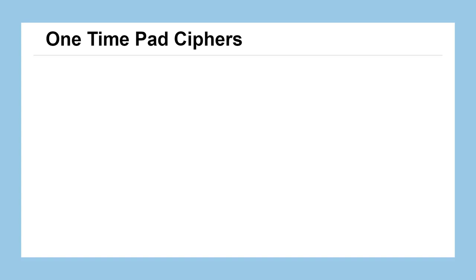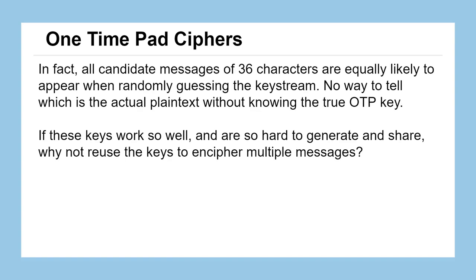When you are free to choose any random character for the key at any position, you could conceivably decode any candidate plain text that is a real English message. In theory, if you brute forced this, you'd generate all possible messages of 36 characters long — they're all equally likely to appear. There's no way for someone trying to brute force this to tell which is the actual plain text without knowing the true one-time pad key. Unlike substitution ciphers with one-to-one mapping, with this Vigenère cipher any message of 36 characters could pop out, and they're all equally likely.